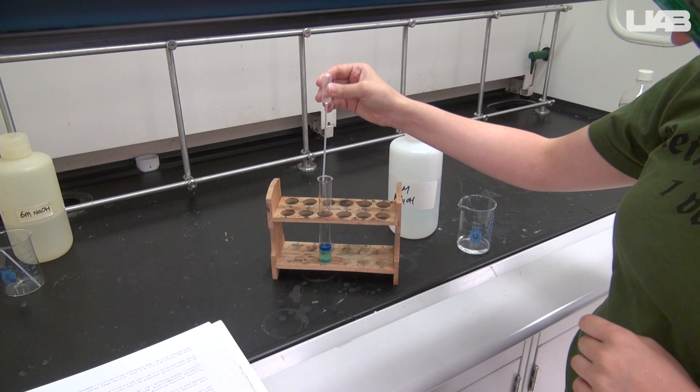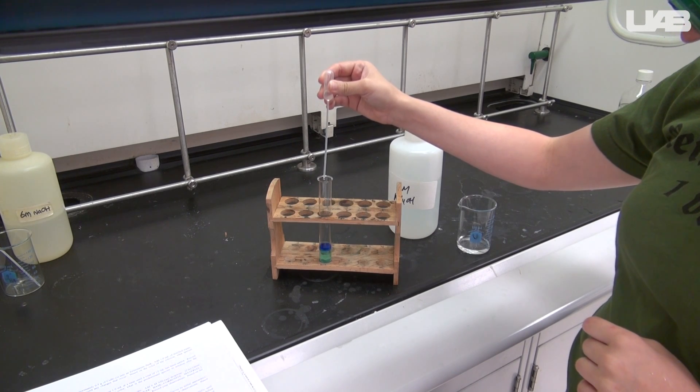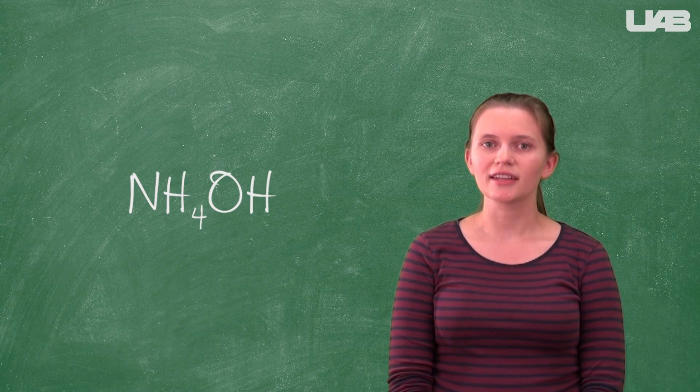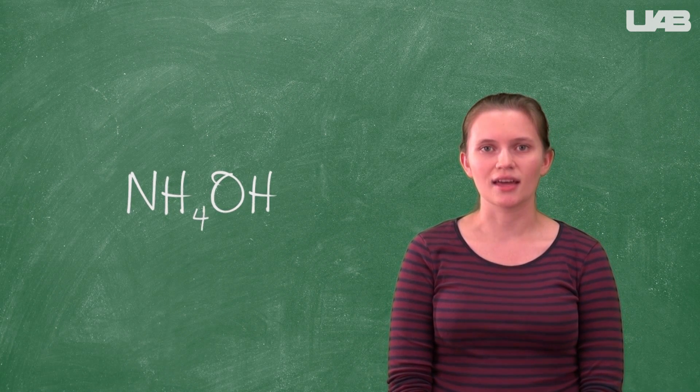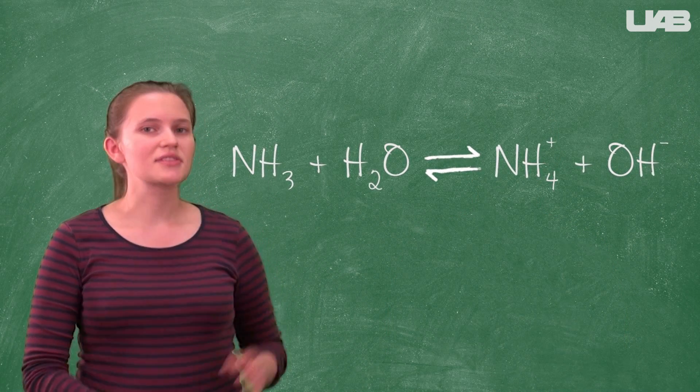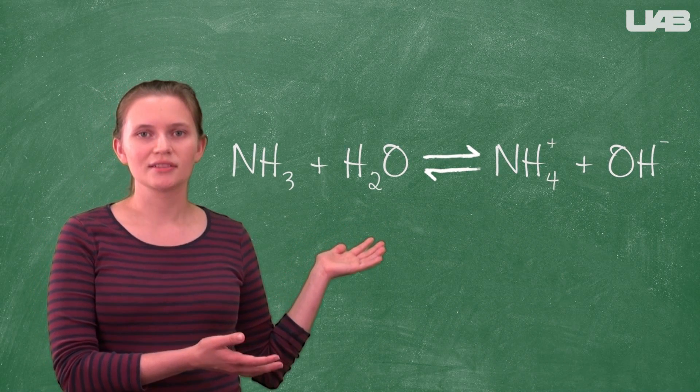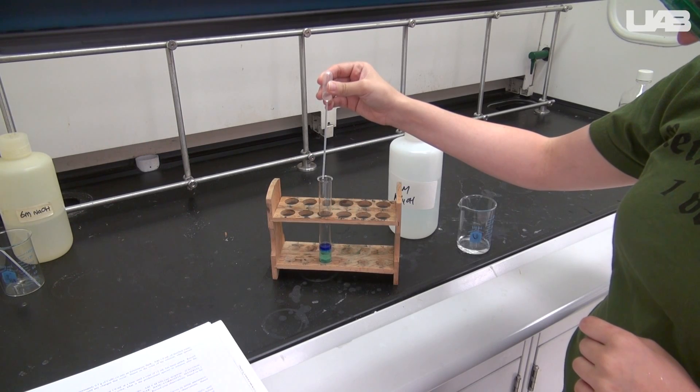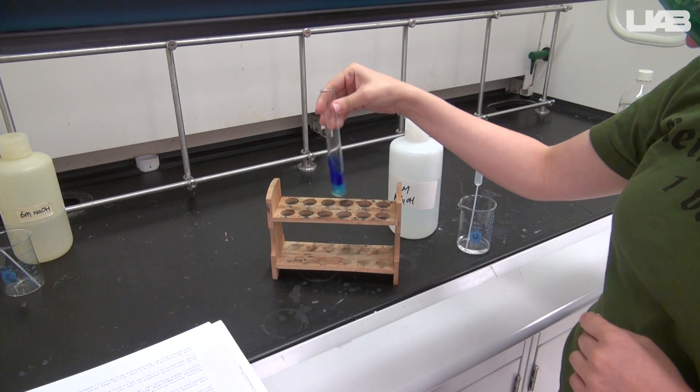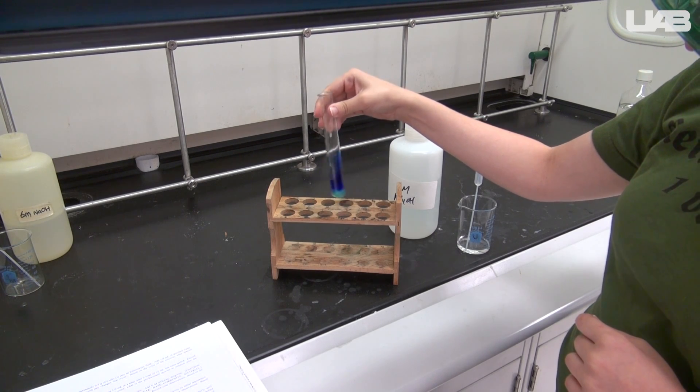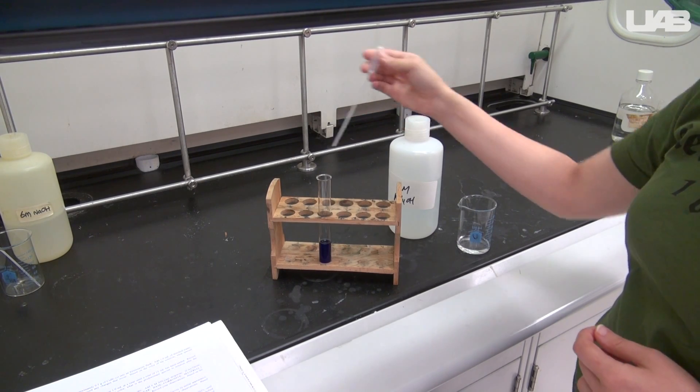You have to go to the hood to add the ammonia because the fumes are strong. When you are looking for this reagent, you will find it labeled ammonium hydroxide. This is because it undergoes this equilibrium reaction in water. You will add 6 molar ammonia drop by drop until no further changes occur. Record your observations and decide what the dominant species is.